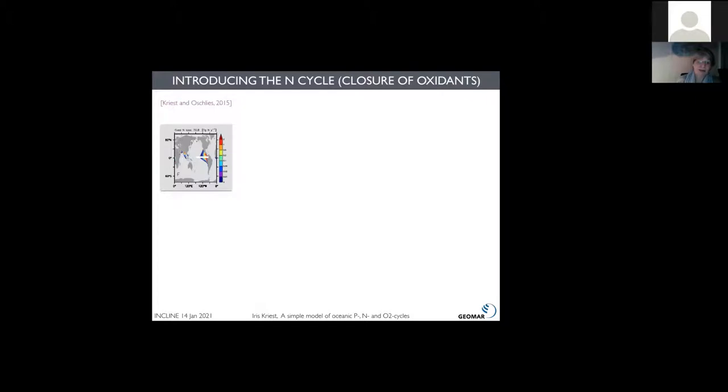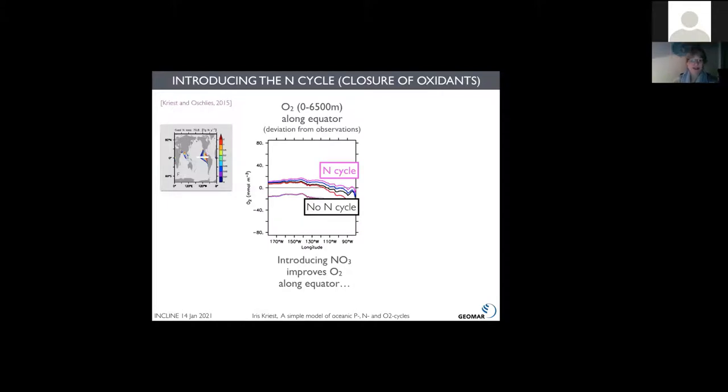Now, does this help? Will the model get better? To investigate this, one can sample a section here along the equator from the west to the east. This is 100 degree west, close to the American coast along the equator. The lines show oxygen averaged over the water column for different model setups. If you focus just on the black line for now, this is the model without nitrogen cycle, and we see that we end up with a considerable oxygen gap of about 20 micromole here, very close to South American coast. Whereas if we introduce the nitrogen cycle, oxygen looks much better. Oxygen looks much more reasonable.